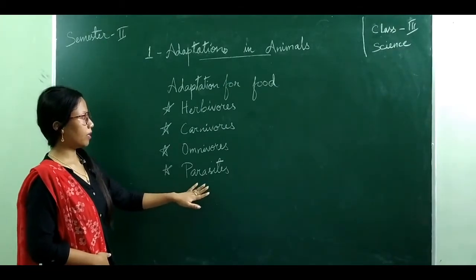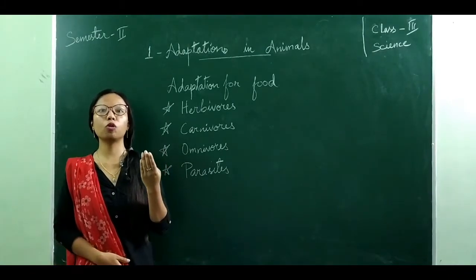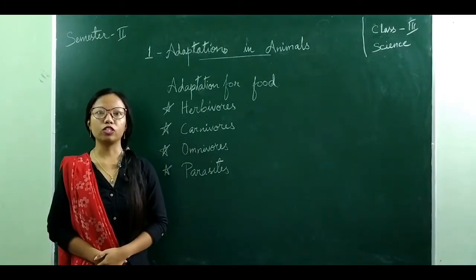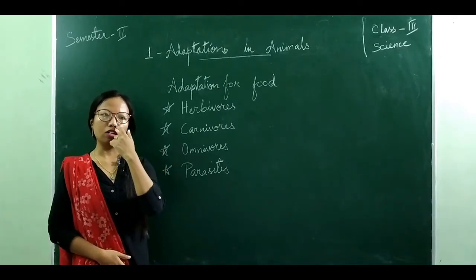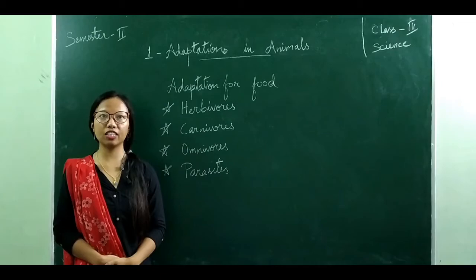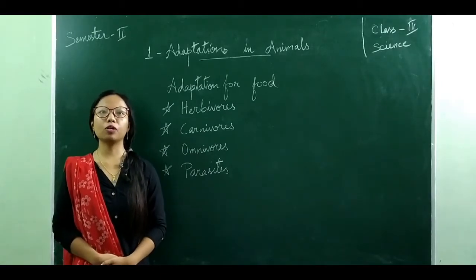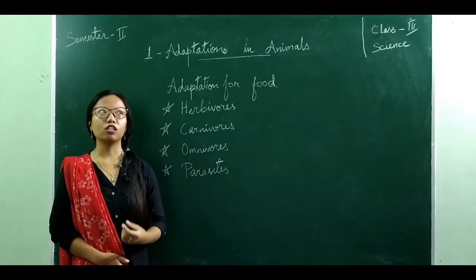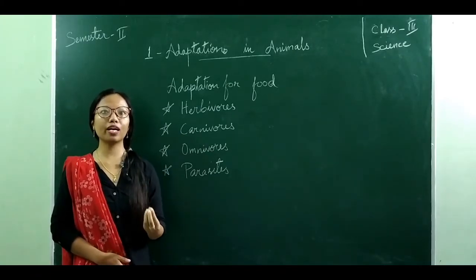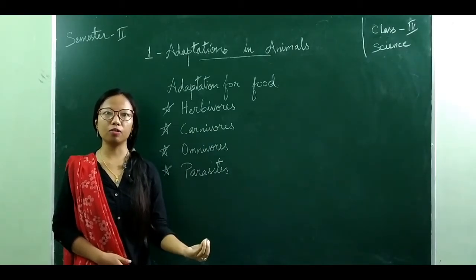The last category is parasites. Parasites are those animals that feed on both plants and animals for their living — for example, mosquitoes, lice, fleas, and leeches. Because they don't have teeth, they have a tube-like structure with the help of which they suck the blood of other animals.